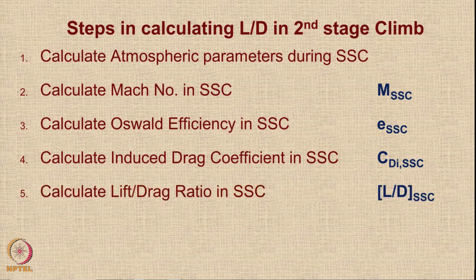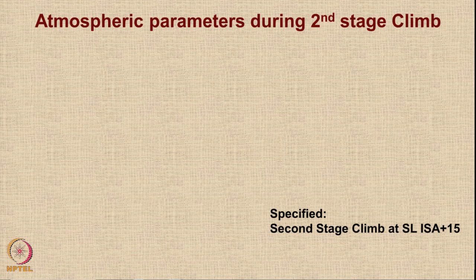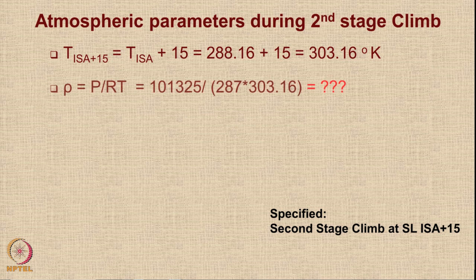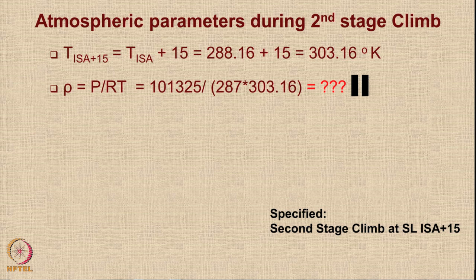Once CDI is calculated, we add CDO and the additional drag from flap deflection to get the total CD. With CD and CL known, we can get L/D. For the atmospheric calculation at ISA+15: temperature = 288.16 + 15 = 303.16 K. Density ρ = P/(RT) = 101325/(287 × 303.16) = 1.1646 kg/m³. The sonic speed a = √(γRT) = √(1.4 × 287 × 303.16) = 349 m/s. The density ratio σ = 1.1646/1.225 = 0.9502.